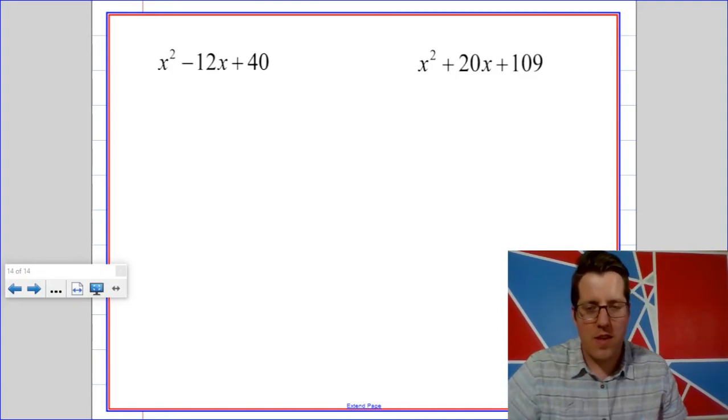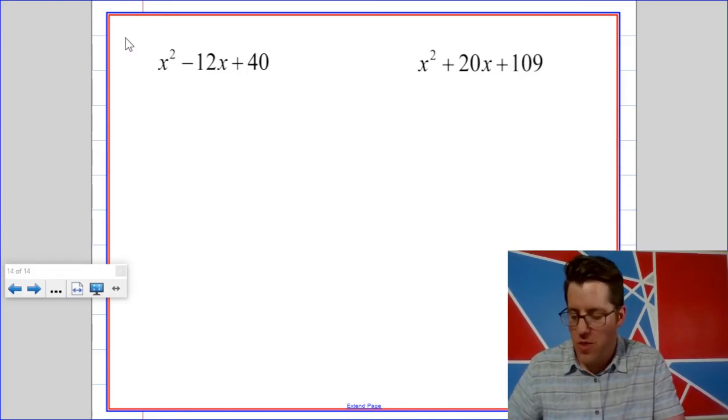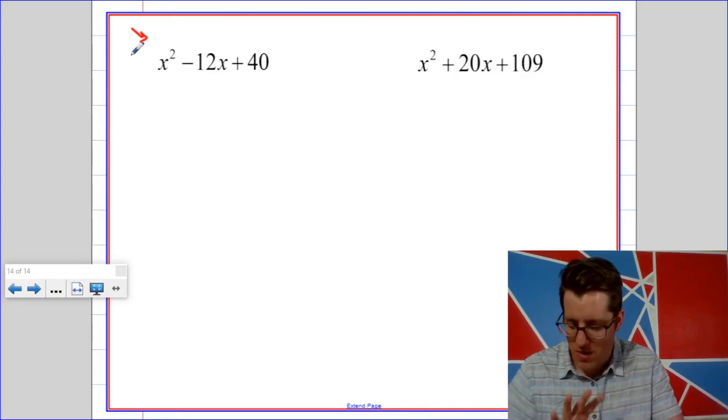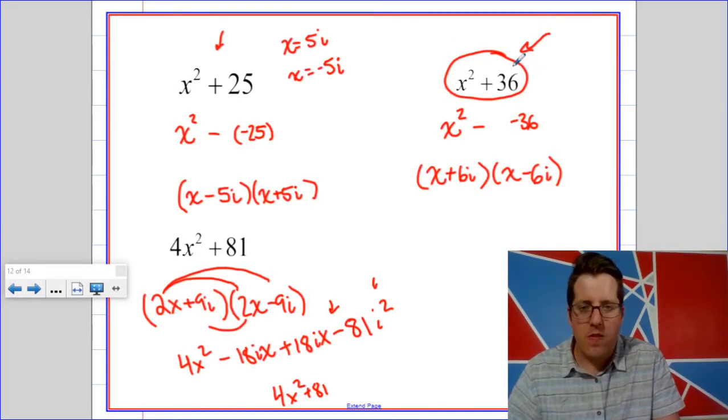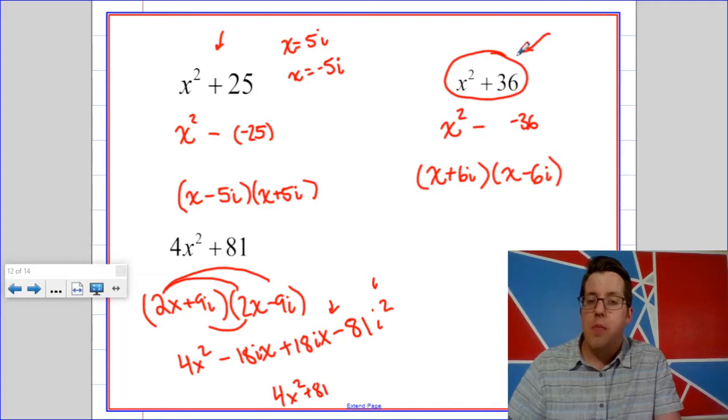We can take this a step further by thinking of this as a difference of squares. Now I know what you're thinking. You look at something like x squared plus 36 and you're like that is not a difference of squares because the word difference means subtraction. But at least there are squares there.